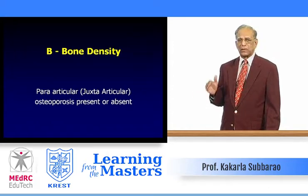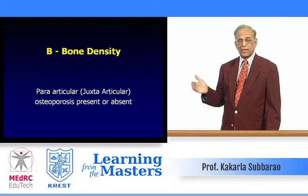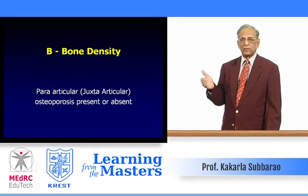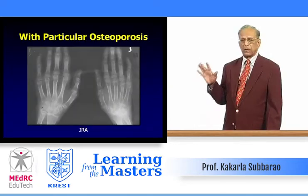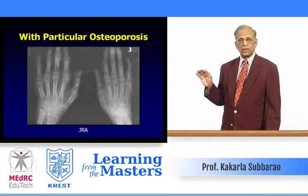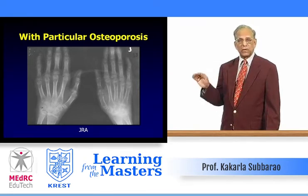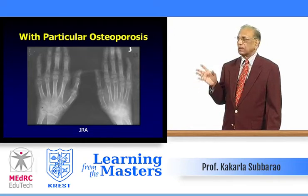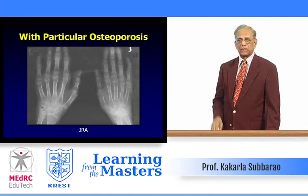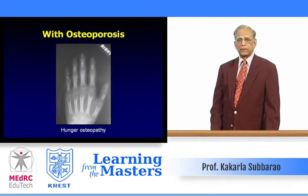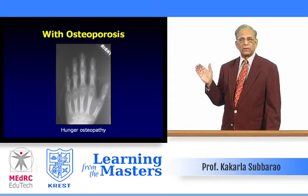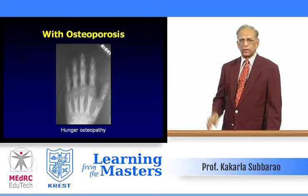Periarticular osteoporosis: its presence or absence makes a difference in differential diagnosis of joint disease. Typical periarticular osteoporosis is seen in acute rheumatoid arthritis; in chronic or burnt-out rheumatoid arthritis it may not be present. Acuity of the disease can be gauged by its presence. Hunger osteoporosis — in starvation, partly due to hypoproteinemia and partly due to immobilization — also produces periarticular osteoporosis.